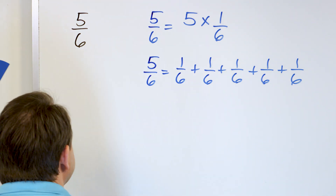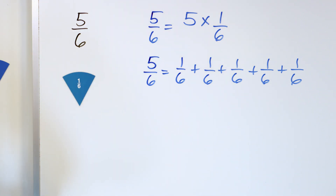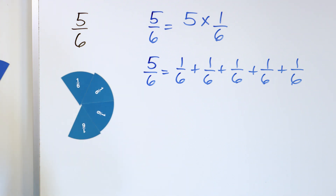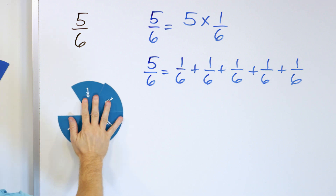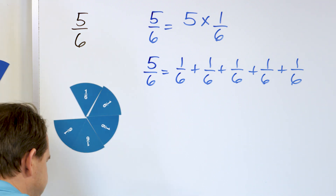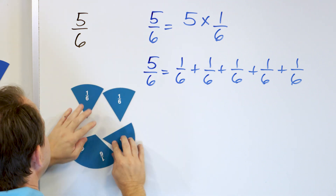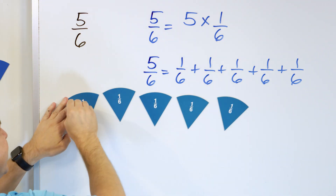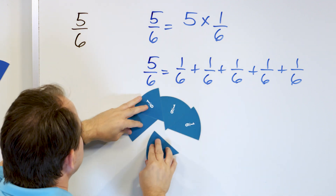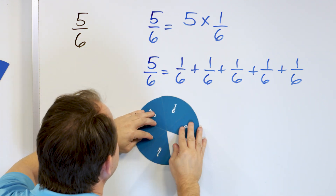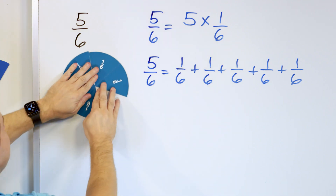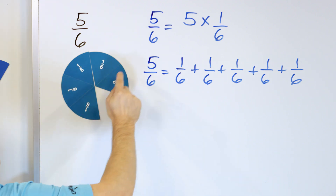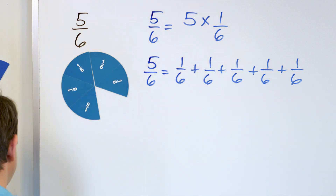Let's put the fraction on the board. There's 1/6th, 2/6ths, 3/6ths, 4/6ths, and 5/6ths. Whether I keep it tucked into a circle or spread it out, if I add all of these 6ths together, it equals 5/6ths. Or if I take 1/6th times 5, it equals 5/6ths. I want you to start thinking of fractions as taking 1/6th and just adding it to itself that many times, or multiplying by that many numbers.